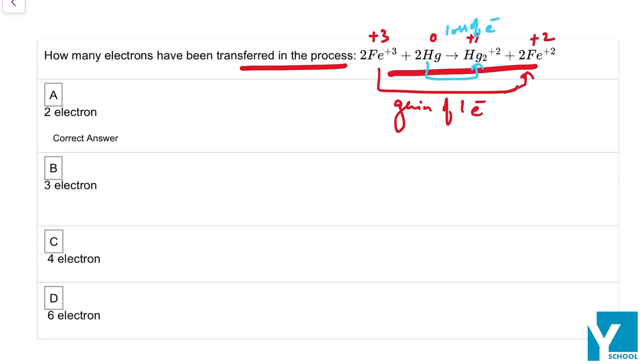So how many electrons are transferred, which is finding the loss of one electron and gain of one electron. That is for one mole. So you can see clearly in both cases two moles are considered. So it means net loss and gain of electrons which are involved in this process will be 2. So therefore the correct answer is 2.